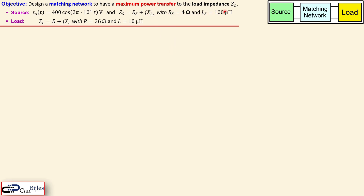The source impedance is a series RL circuit consisting of RS and its associated inductor reactance XL_S. For the load, we also have a series RL circuit with resistor R and inductor reactance XL. The load values are 36 ohms and 10 microhenries.